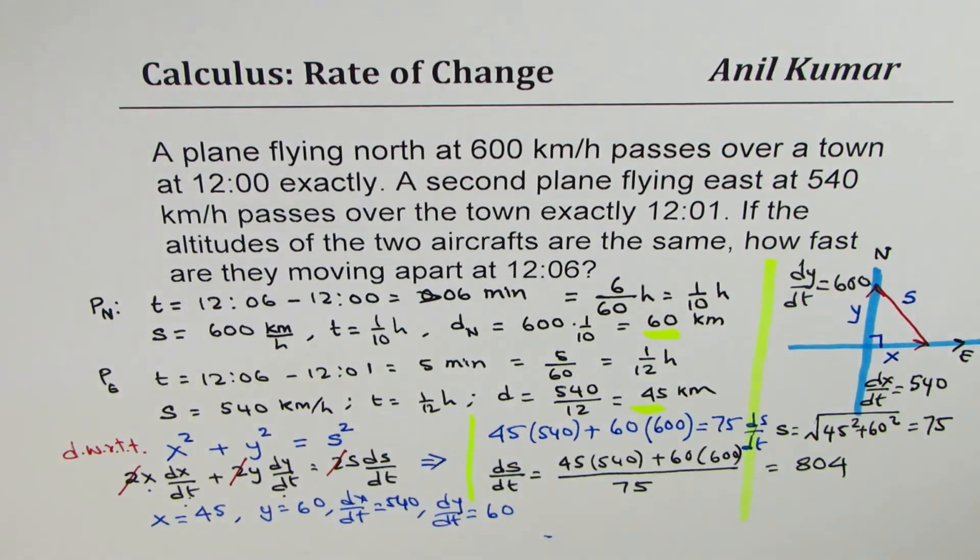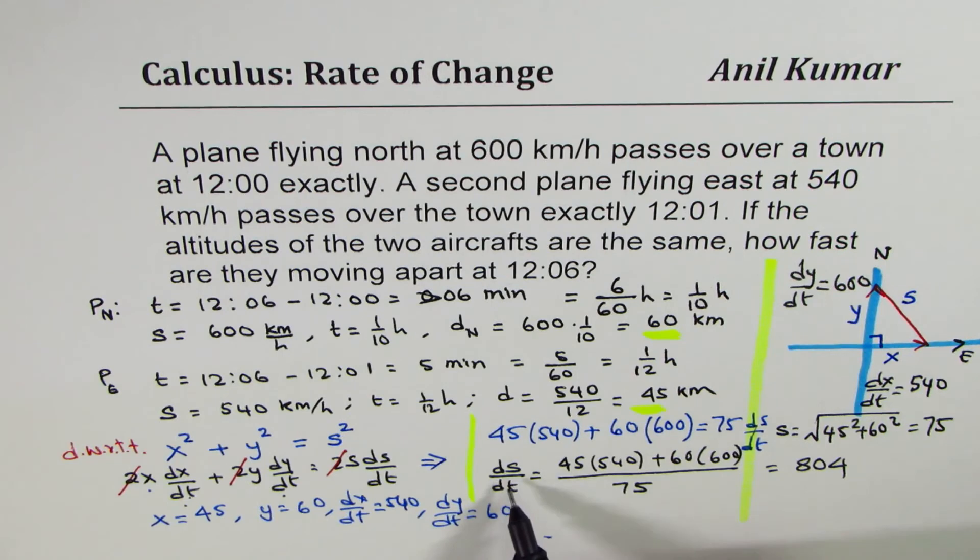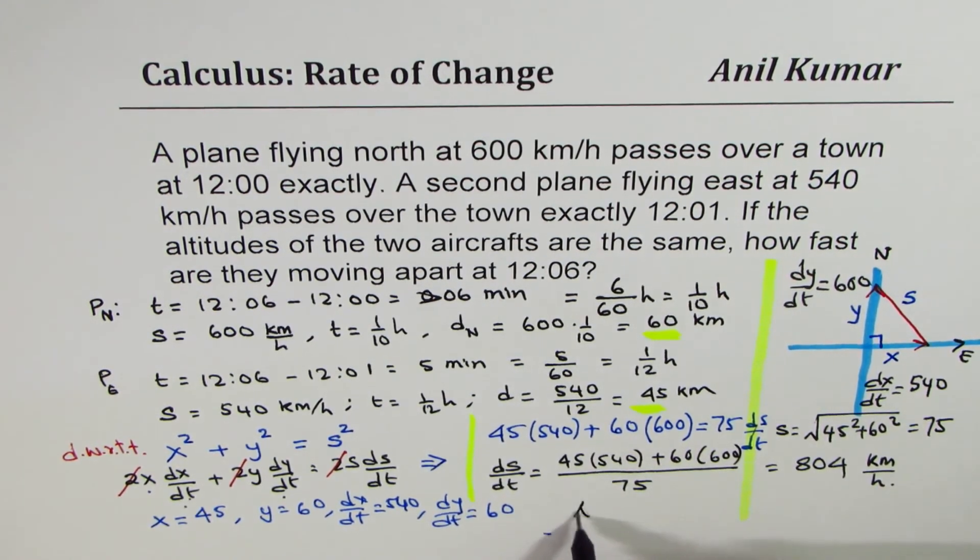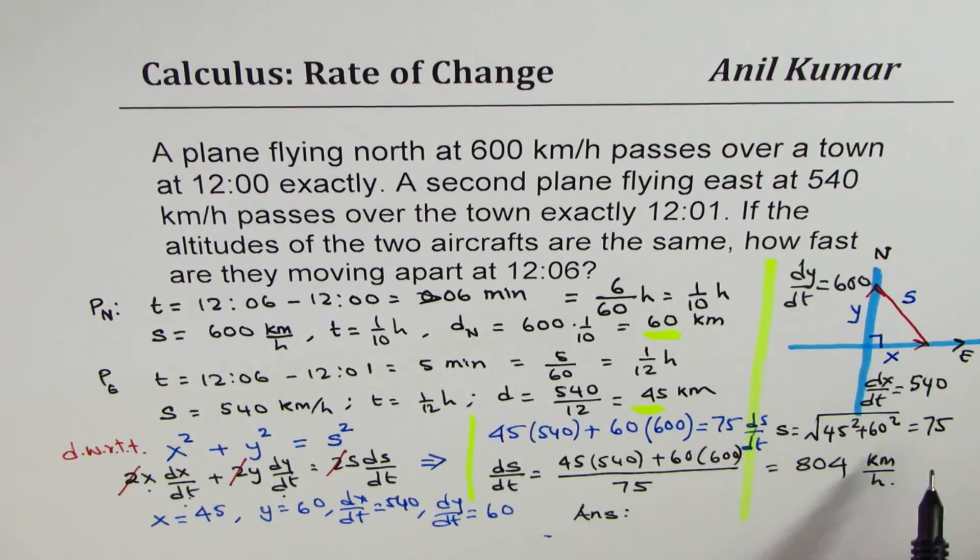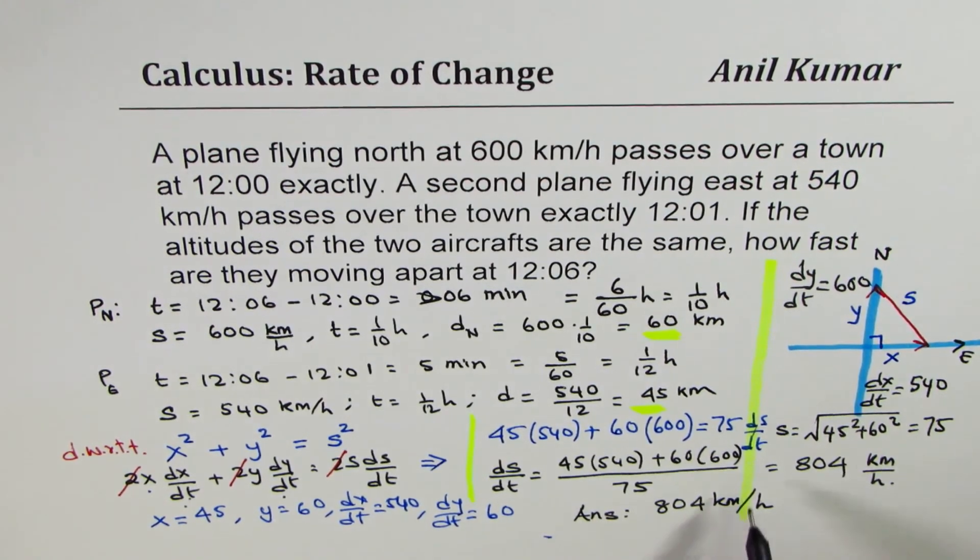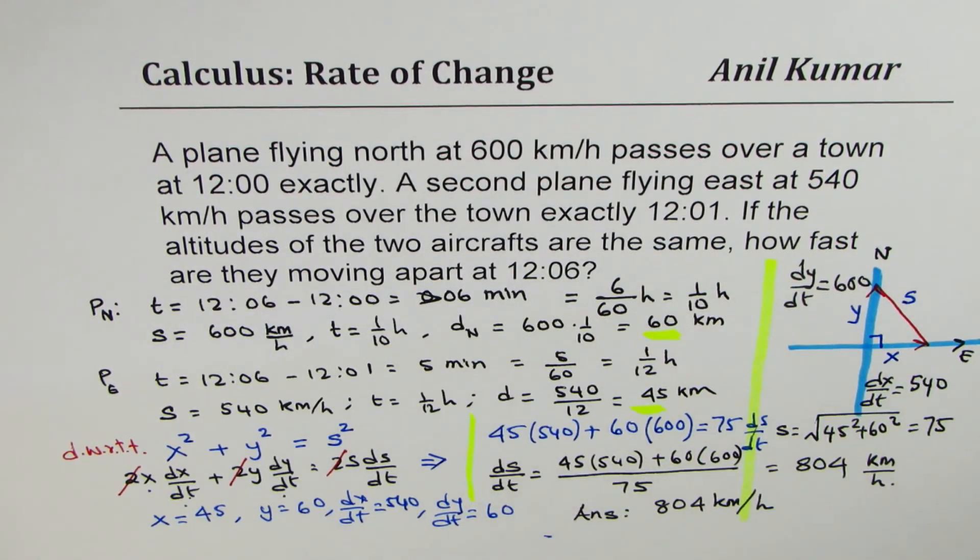Now all these word problems, you should always write units. We have change of distance, so that is in kilometers and time is in hours. So the unit will be kilometers per hour. So we have our answer. They're separating at the rate of 804 kilometers per hour at 12:06. That should be your final statement giving the complete answer. So I hope the strategy is absolutely clear.